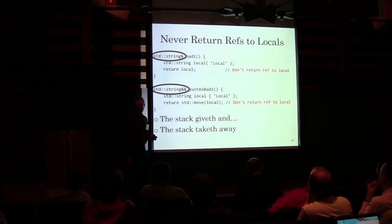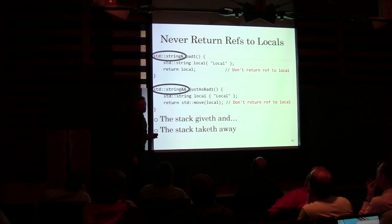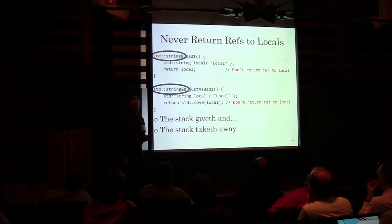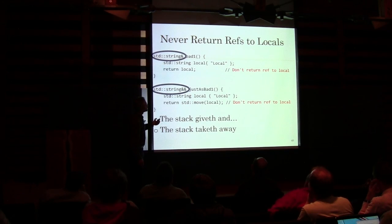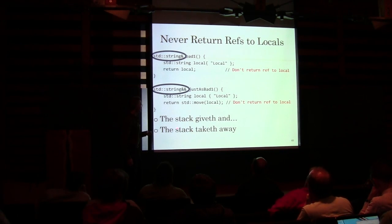Just because I've seen code like this — it's really tempting. You want to be efficient. You want to return that R-value reference. If it's a local, don't ever return a reference to a local. The stack giveth and the stack taketh away.